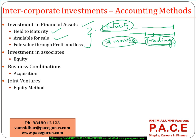When it comes to investment in associates, we will discuss the equity method of representation in depth with an example. For both investment in associates and joint ventures, the method used from an accounting and financial statement perspective is the equity method. Whereas when it comes to business combinations — where the stake is more than 50% and it is a controlling stake — we will use the acquisition method of preparing the financial statements.